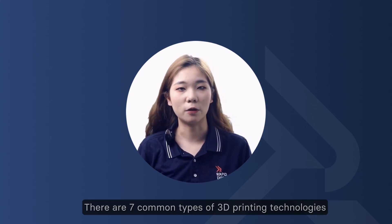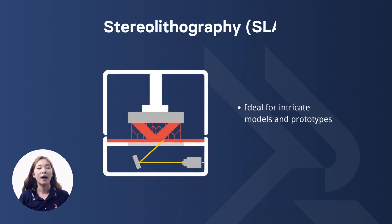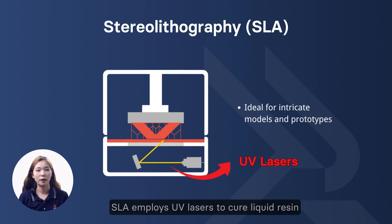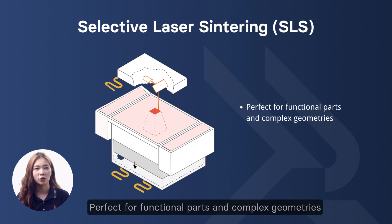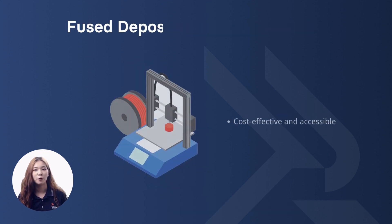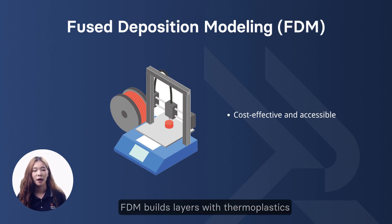There are 7 common types of 3D printing technologies. Stereolithography, or SLA, is ideal for intricate models and prototypes — it employs UV lasers to cure liquid resin. Selective Laser Sintering, or SLS, is perfect for functional parts and complex geometries, fusing powdered materials using lasers. Fused Deposition Modeling, or FDM, is cost-effective and accessible, building layers with thermoplastics.